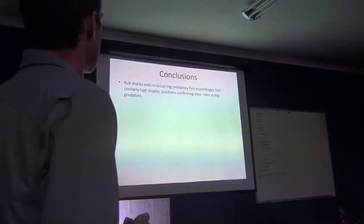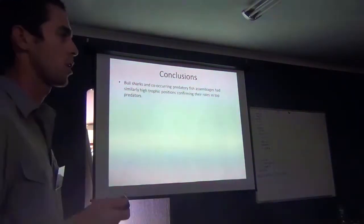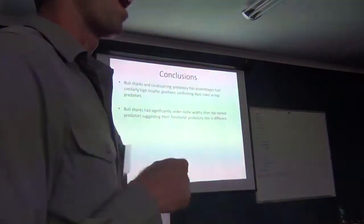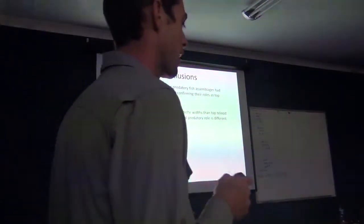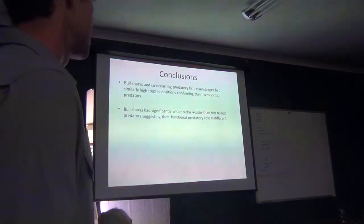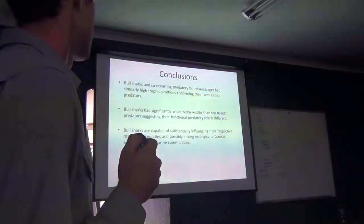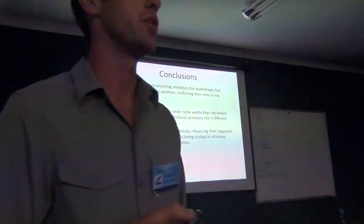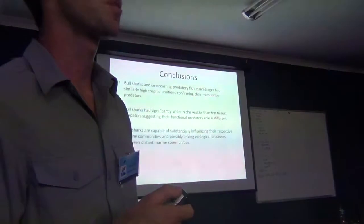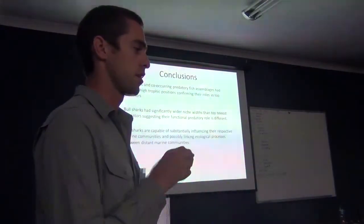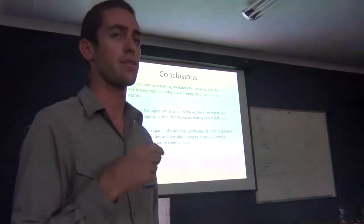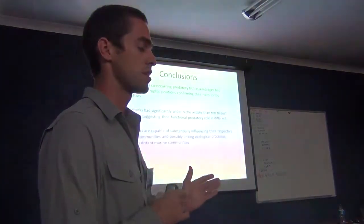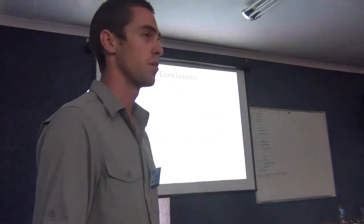Although bull sharks and the teleost predators had a similarly high trophic position, bull sharks had a significantly wider niche width, suggesting they have a greater impact through predation on their marine environments compared to the teleost top predatory fish. This may be important when considering how top predators influence their respective communities. Large shark species such as the bull shark may be exceptionally important not only in shaping their respective marine communities, but also in linking processes between geographically distant marine communities — unlike top predatory teleost species, which appear to have a more limited dietary range and influence on their community.